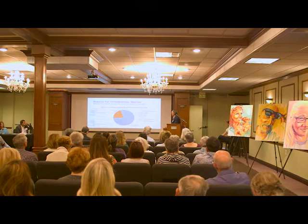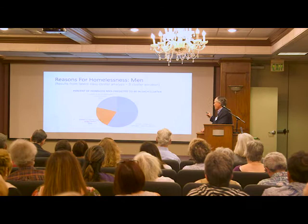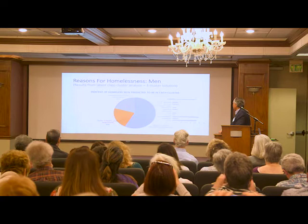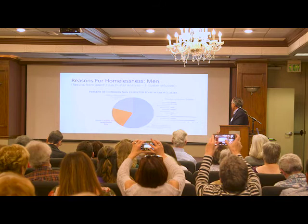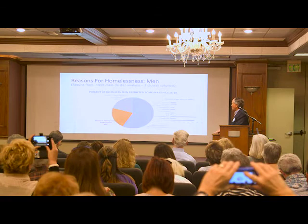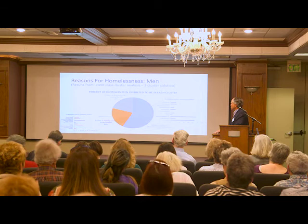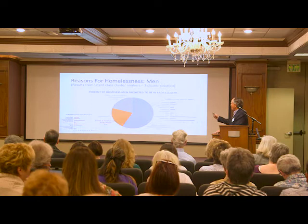When we look at men, the clusters are a little different. Cluster one is lack of affordable housing and job loss, not quite as large as for women. Mental health, physical health, death in the family, alcohol and drugs are beneath 10%. The big drivers again are lack of affordable housing, job loss, and insufficient wages. The second cluster for men, 22%, is family issues and drugs and health. In the bar graph, family issues is the largest category, followed by drugs and then health problems.